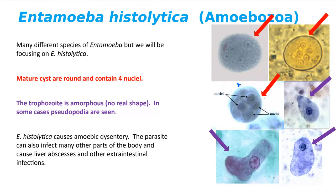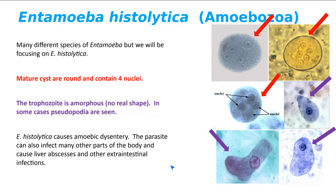The trophozoites don't have any real distinct shapes. And if you look at the background — all that background debris — it tells you it's in poop, so what does it cause? Dysentery. This organism can infect other parts of the body too, but we'll just stay with dysentery.